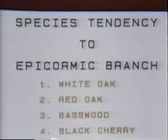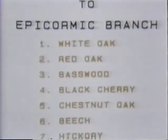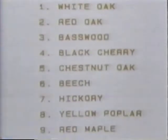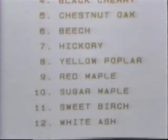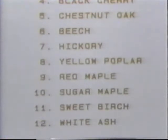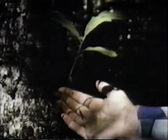Dominant co-dominant trees with large healthy crowns relative to their DBH are preferred candidates for selection as timber crop trees, because they are less likely to epicormic branch. Certain species have a greater tendency to epicormic branch than others. White oak is the most prone, followed by red oak, basswood, black cherry, chestnut oak, beech, hickory, yellow poplar, red maple, sugar maple, sweet birch, and white ash. Apparently, there is also a degree of genetic control within individual trees which influences epicormic branching.